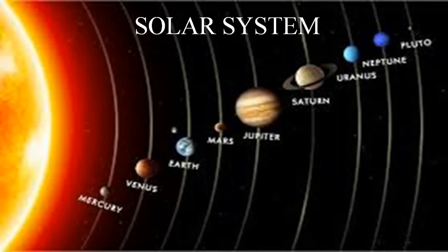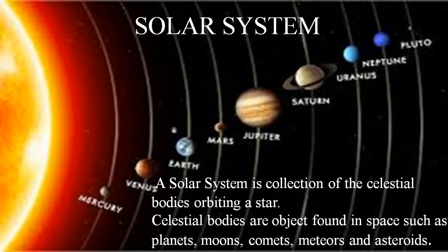In this picture we can see our solar system. These are the planets which are orbiting around the Sun in order of their distance from the Sun. The solar system is a collection of celestial bodies orbiting a star. Celestial bodies are objects found in space, such as planets, moons, comets, meteors, and asteroids.